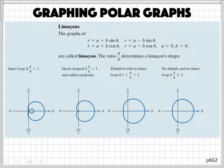But this one changes based on what the ratio is between A and B. If your A divided by B is less than 1, then you're going to have the loop. If your A divided by B equals 1, then you're going to have, they call it the heart.